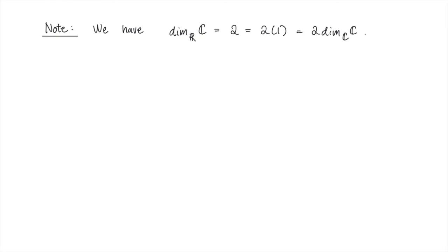What can we take away from this discussion? Well, notice that the dimension of C as a vector space over R is 2, and the dimension of C as a vector space over C is just 1. Again, when we write the dimension of a vector space, we now have to be careful, and so we'll use subscripts to indicate which scalar field we're working with.